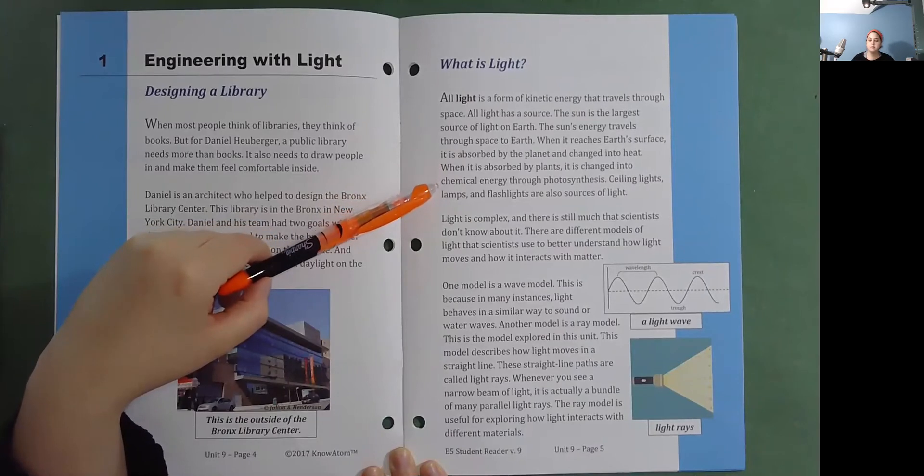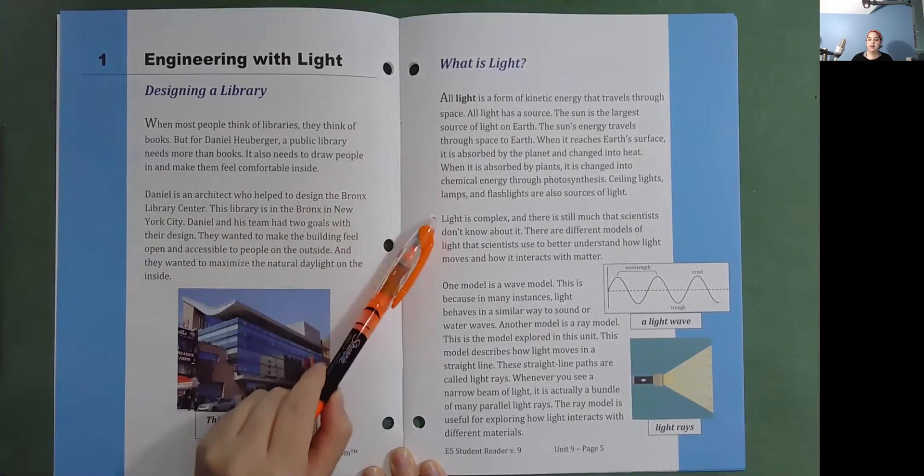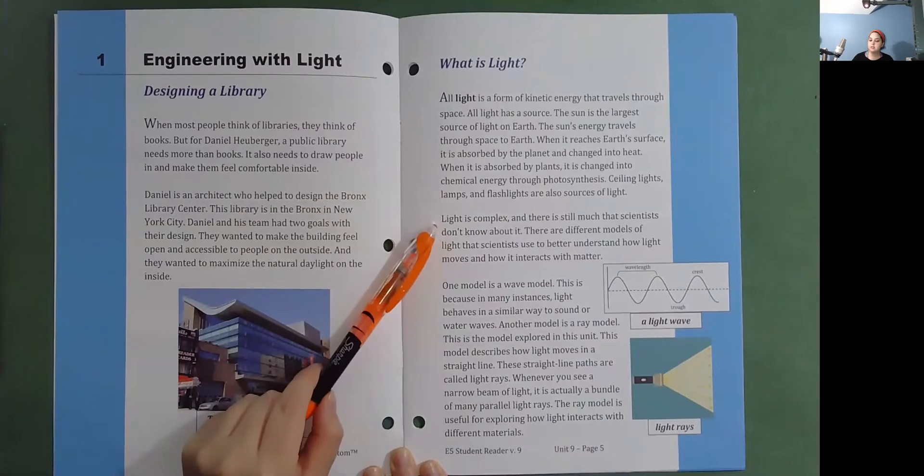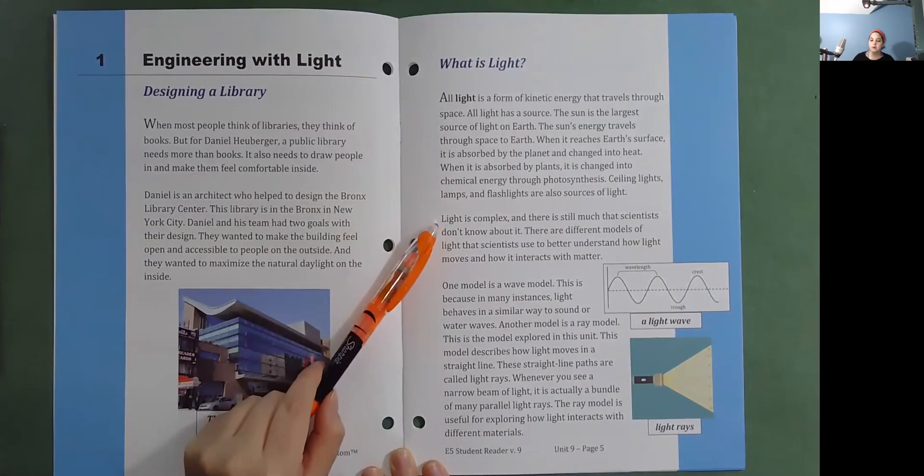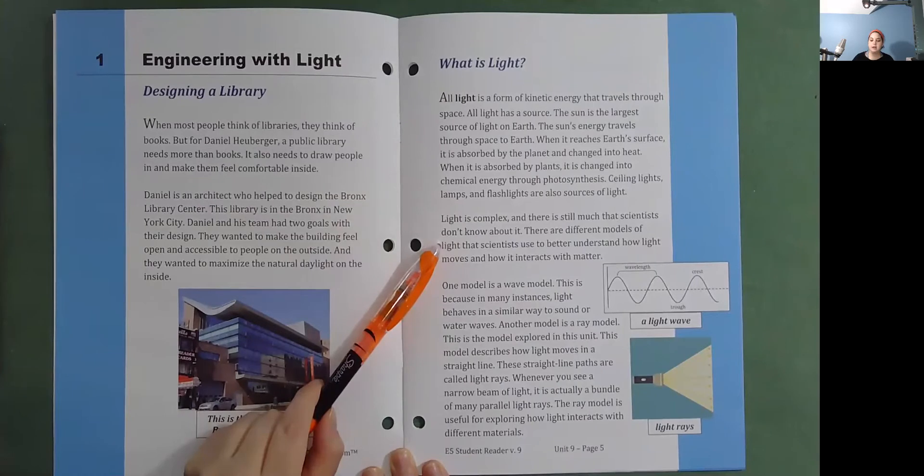Ceiling lights, lamps, and flashlights are also sources of light. Light is complex and there is still much that scientists don't know about it. There are different models of light that scientists use to better understand how light moves and how it interacts with matter.